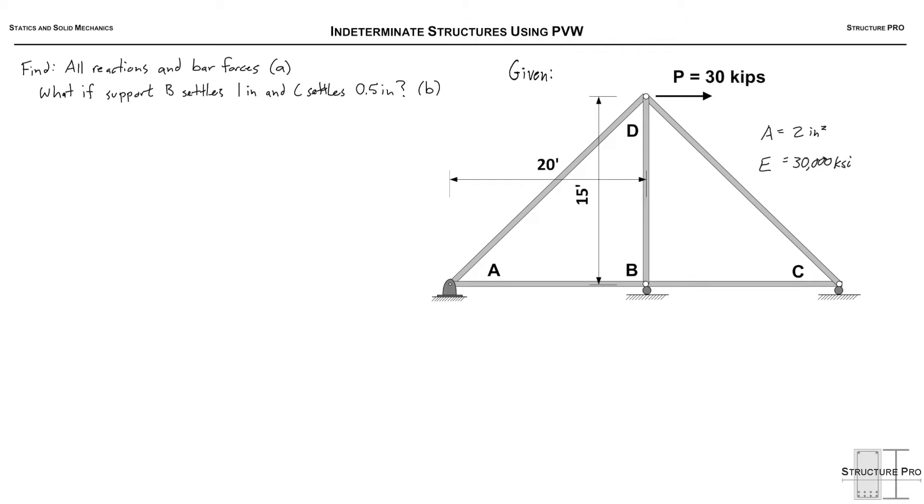And then part B we're asked what if support B settles one inch and support C settles 0.5 inches. So we're given the truss shown here. A, B, C, and D. And we know that the area of each bar is 2 inches squared and that the E modulus of elasticity of the material is 30,000 kips per square inch.